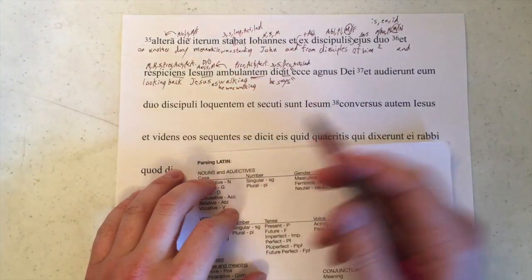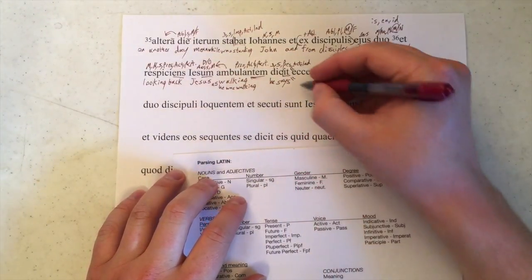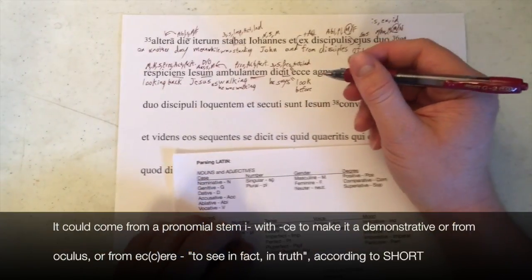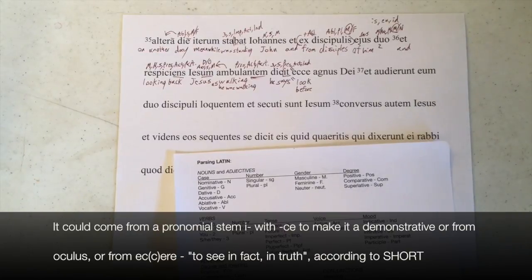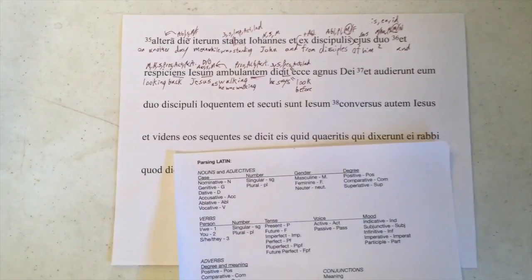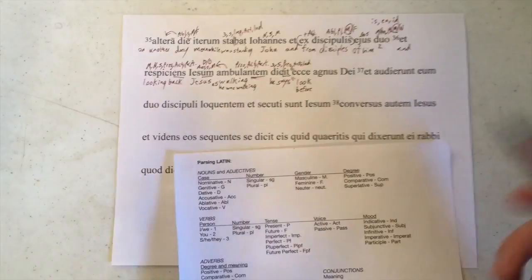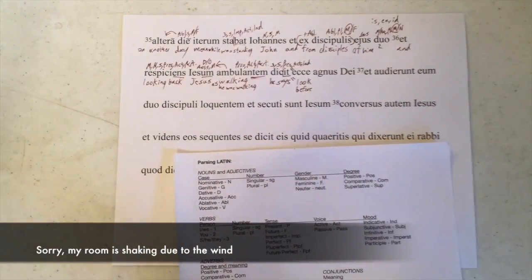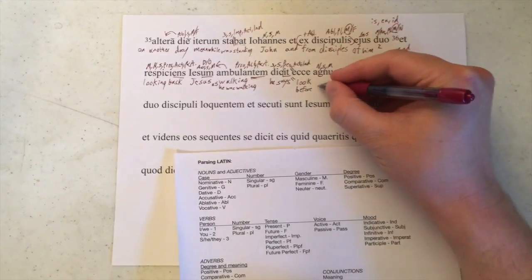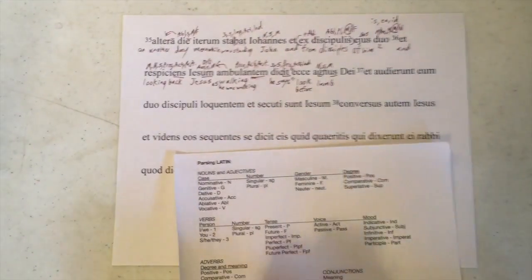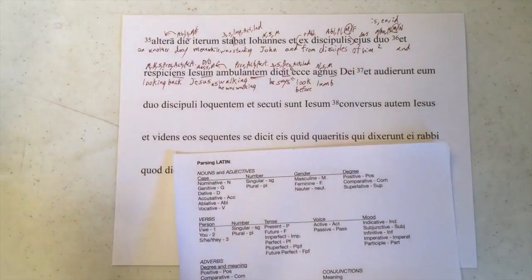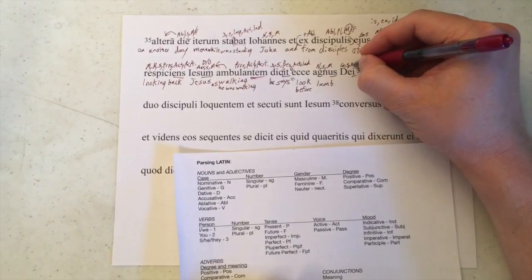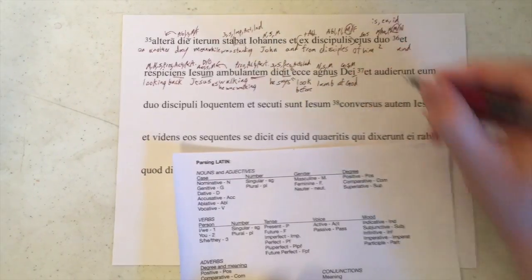Ecce in the direct statement means 'look' or 'behold.' I believe the Greek equivalent is IDE from OIDA, used somewhat like an imperative but as an exclamation, just as ecce is. Agnus Dei: we have no verb in here, which means we probably are supposed to assume a form of sum. Agnus is nominative, singular, masculine — it means 'lamb.' Then Dei could be nominative plural or genitive singular masculine. Since we already have a nominative singular masculine and there's no conjunction to connect two of them, Dei must be genitive singular — 'of God.' And that's where verse 36 ends.